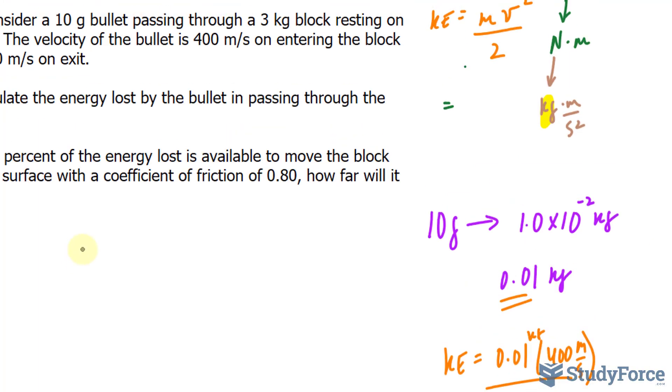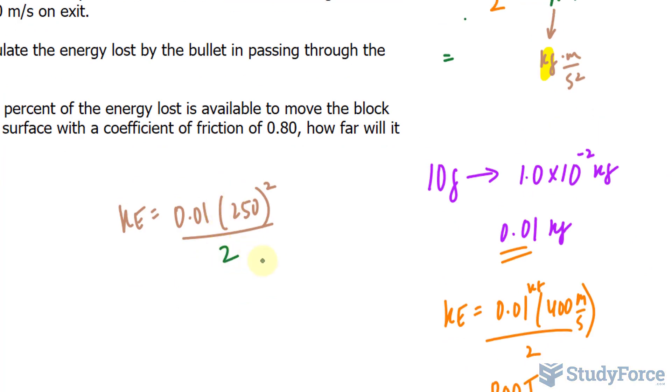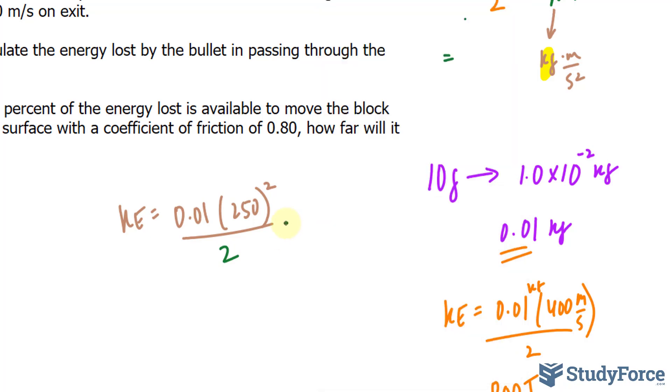Now let's look at the final or after it has passed through the mass. Using the same format, 0.01 times, this time the speed is 250 raised to the power of 2. And I'm not putting in the units because I know what the outcome will be, the units of the outcome. Now 0.01 times 250 raised to the power of 2 divided by 2, and that is 312.5.